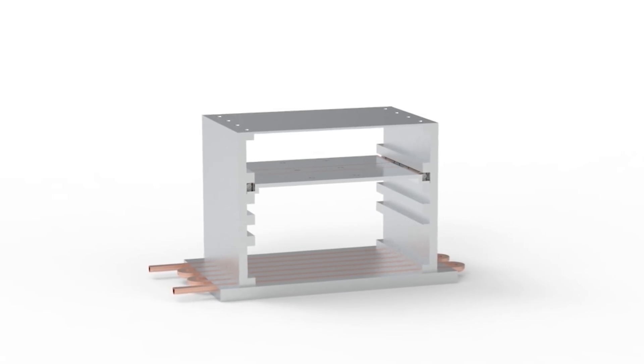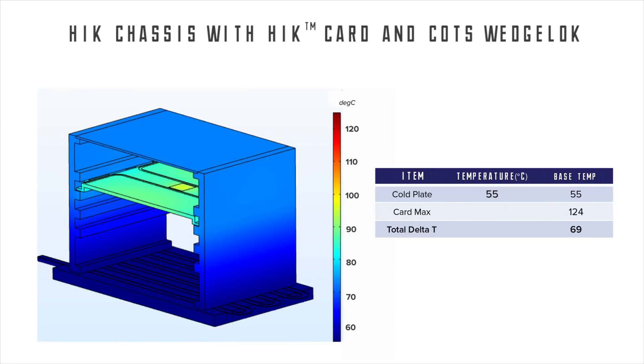After reinserting a high K frame in place of the aluminum conduction card frame, the max temperature of the card drops from 124 degrees C to 96 degrees C. High K plates in 6U form factors can routinely achieve thermal conductivities of 600 to 800 watts per meter Kelvin, dependent on component placement.